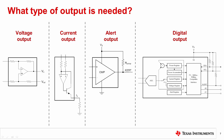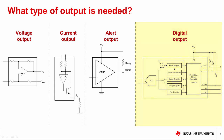If the system simply needs to respond to an overcurrent condition, a current sense comparator with an alert output may be sufficient. Finally, if the current information will be processed by a microcontroller, then choosing a digital output device on an interface like I2C or SPI may be the best choice.